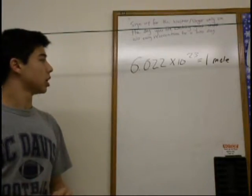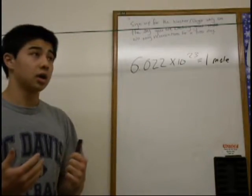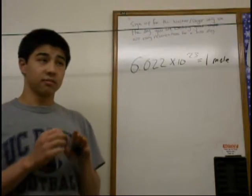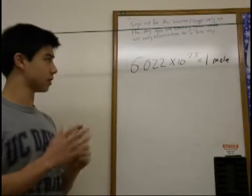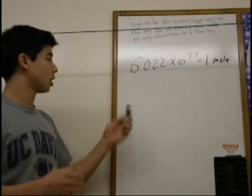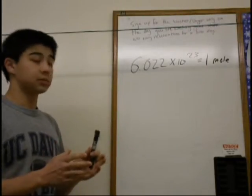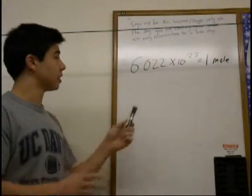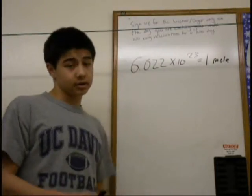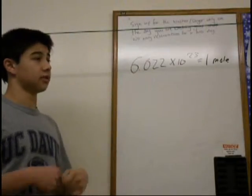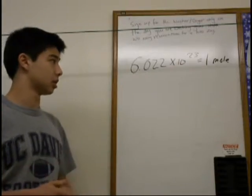This number comes from exactly 12 grams of pure carbon-12, meaning no isotopes in the carbon, it's just pure 12. And this is the number of atoms in that. So in 12 grams of pure carbon-12, you have 6.022 times 10 to the 23 atoms. But this number is used to convert moles to atoms.